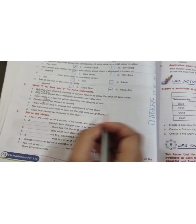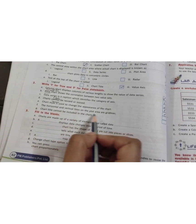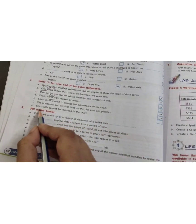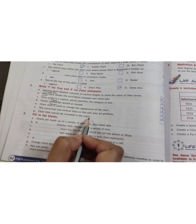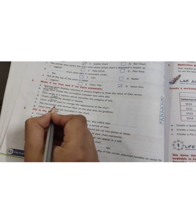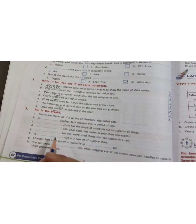Chart title cannot be included in the chart. False. Chart title can be included in the charts. Next, we have fill in the blanks. Charts are made up of a variety of elements also called data. The answer is data objects.